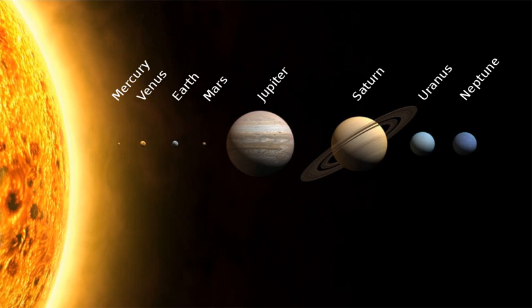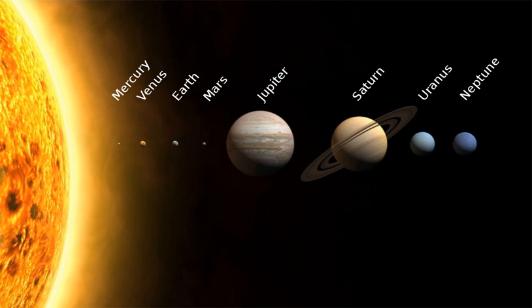6.2.2 Asteroid groups. Asteroids in the asteroid belt are divided into asteroid groups and families based on their orbital characteristics. Asteroid moons are asteroids that orbit larger asteroids. They are not as clearly distinguished as planetary moons, sometimes being almost as large as their partners. The asteroid belt also contains main belt comets, which may have been the source of Earth's water. Jupiter Trojans are located in either of Jupiter's L4 or L5 points, gravitationally stable regions leading and trailing a planet in its orbit. Hilda asteroids are in a 2-3 resonance with Jupiter — they go around the Sun three times for every two Jupiter orbits. The inner solar system also contains near-Earth asteroids, many of which cross the orbits of the inner planets. Some of them are potentially hazardous objects.